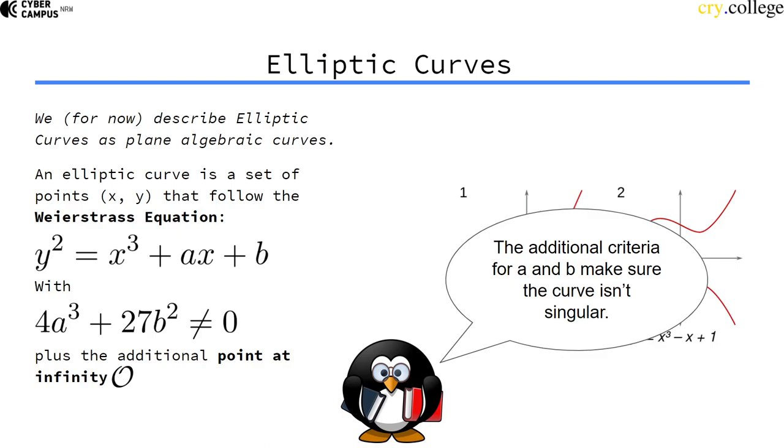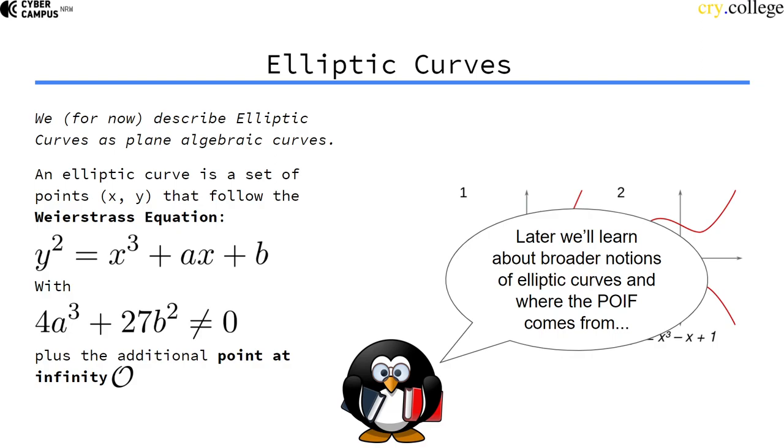As I said, this additional criteria for A and B make sure that the curve isn't singular or doesn't have singularities.